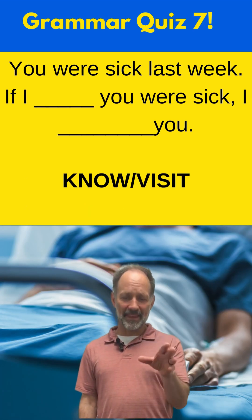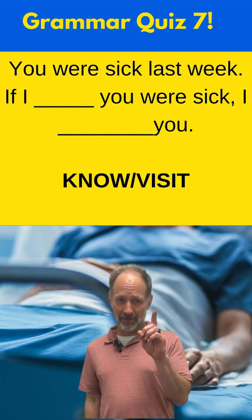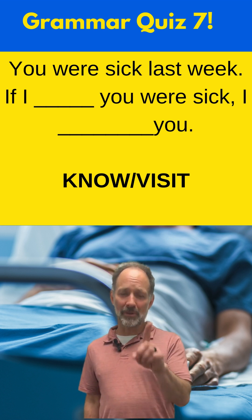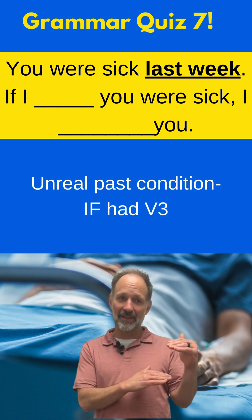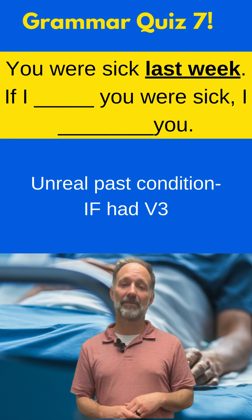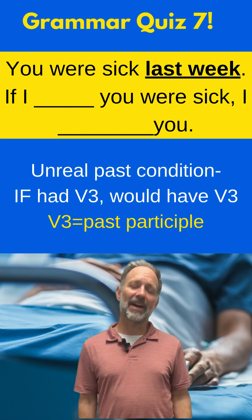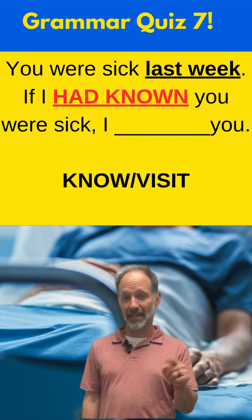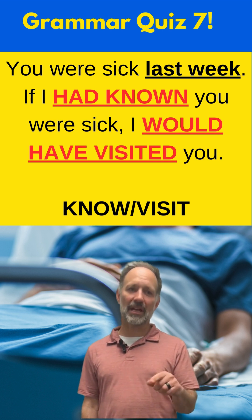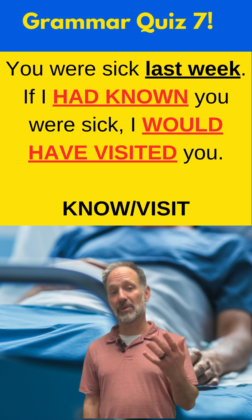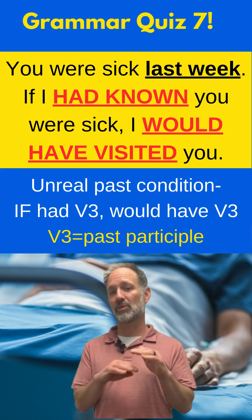Fill in the blanks in this conditional sentence: You were sick last week. If I blank you were sick, I would blank you. We'll use the verbs 'know' and 'visit.' Seeing 'last week' tells me it's a past conditional. The form is if plus past perfect (had plus past participle), and the second part is would have plus V3. So: if I had known you were sick, I would have visited you. That's the pattern for an unreal past situation — if plus past perfect, would have V3.